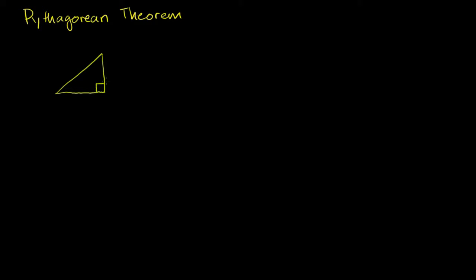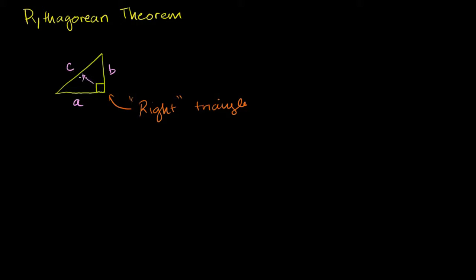The Pythagorean theorem tells us that if we're dealing with a right triangle — a triangle that has a right angle or 90 degree angle in it — then the relationship between its sides is this. This side is a, this side is b, and this side is c. Remember, c is the side opposite the 90 degree angle.